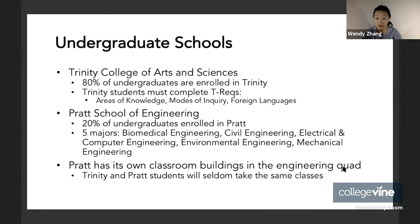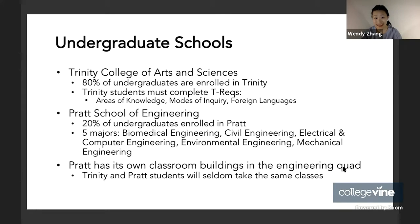Pratt also has its own classroom buildings in the Engineering Quad. While most undergraduate classroom buildings are housed on West Campus, Pratt is kind of its own bubble in eQuad, as it's called, with a handful of buildings exclusively for engineering classes. As a Trinity student, for example, I am a computer science major and computer science is housed within Trinity. I never stepped foot inside any of the Pratt buildings until I took computer architecture, which was also a requirement for electrical and computer engineering majors. Some of my office hours were located in eQuad, and prior to that point I had never taken a single class there.